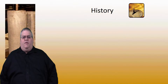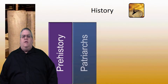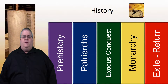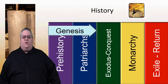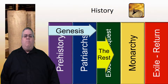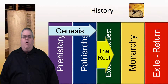And now, just a reminder of the history that's covered by these five books. These five books cover the first three historical epics: the Prehistory, Patriarchs, and the Exodus Conquest. The first two of these epics are covered in the Book of Genesis, and the other four books all cover around the time of the Exodus. In terms of the history, Genesis is a very important book because one book covers two of the historical epics — a very large time period.